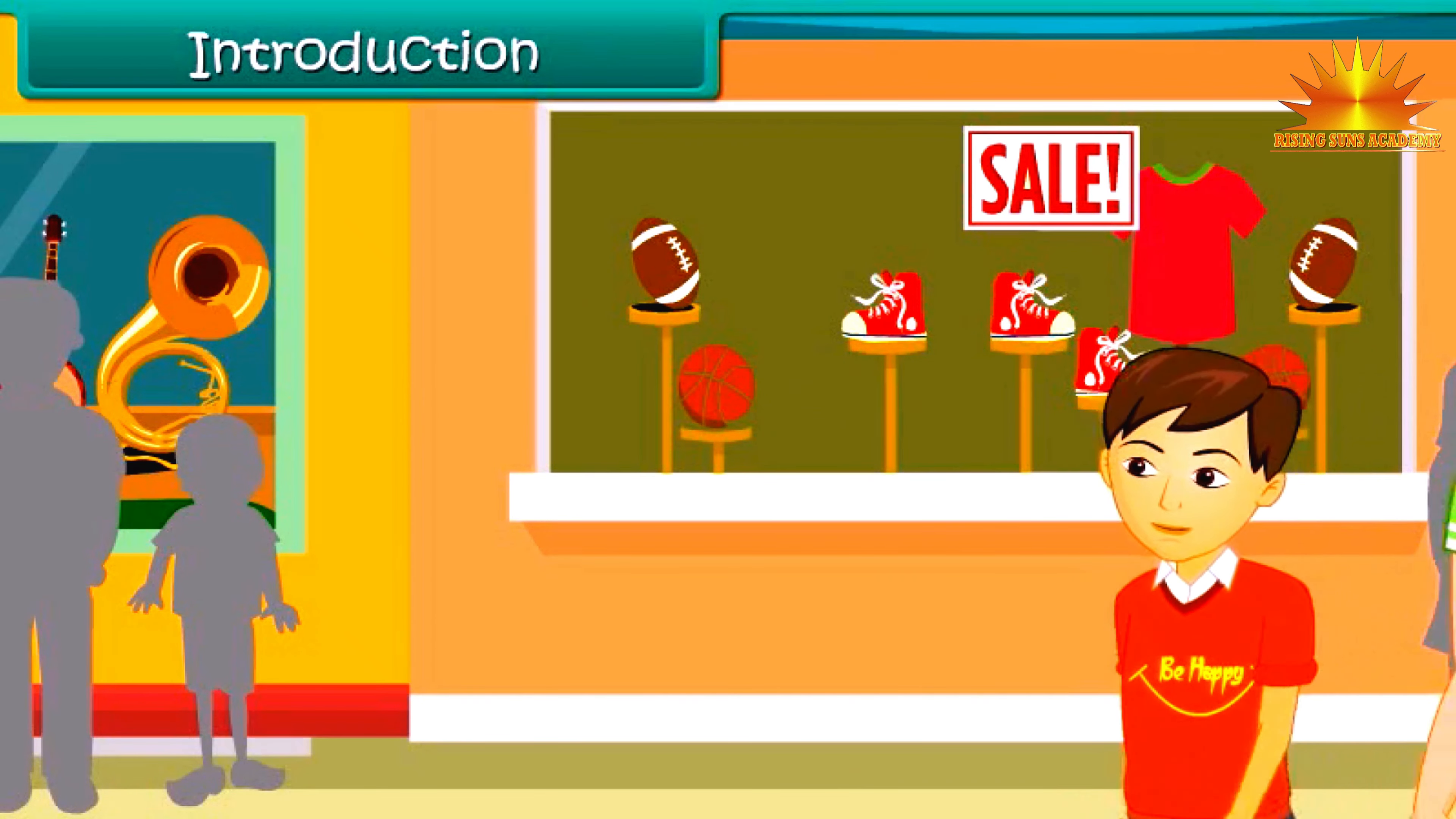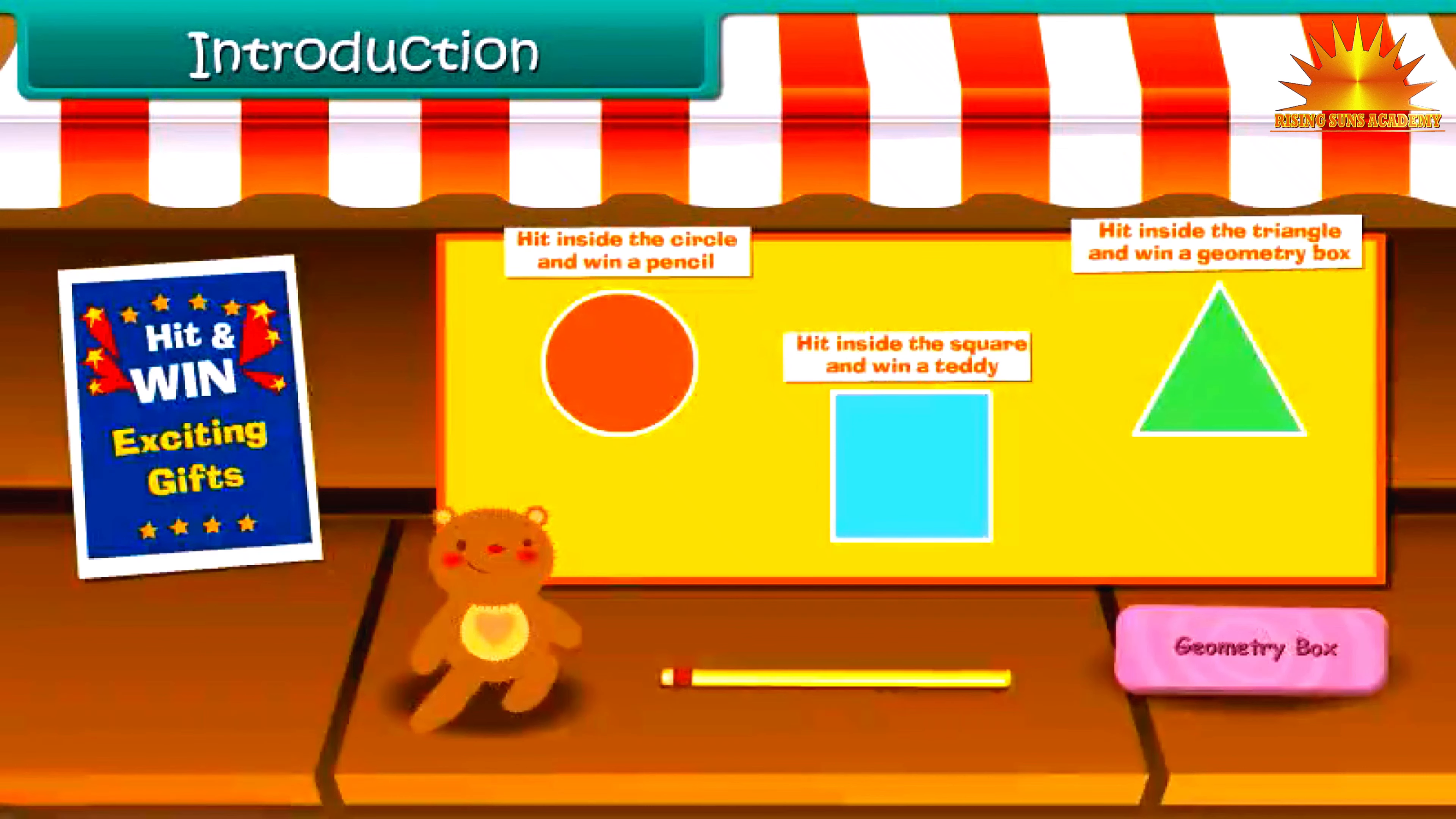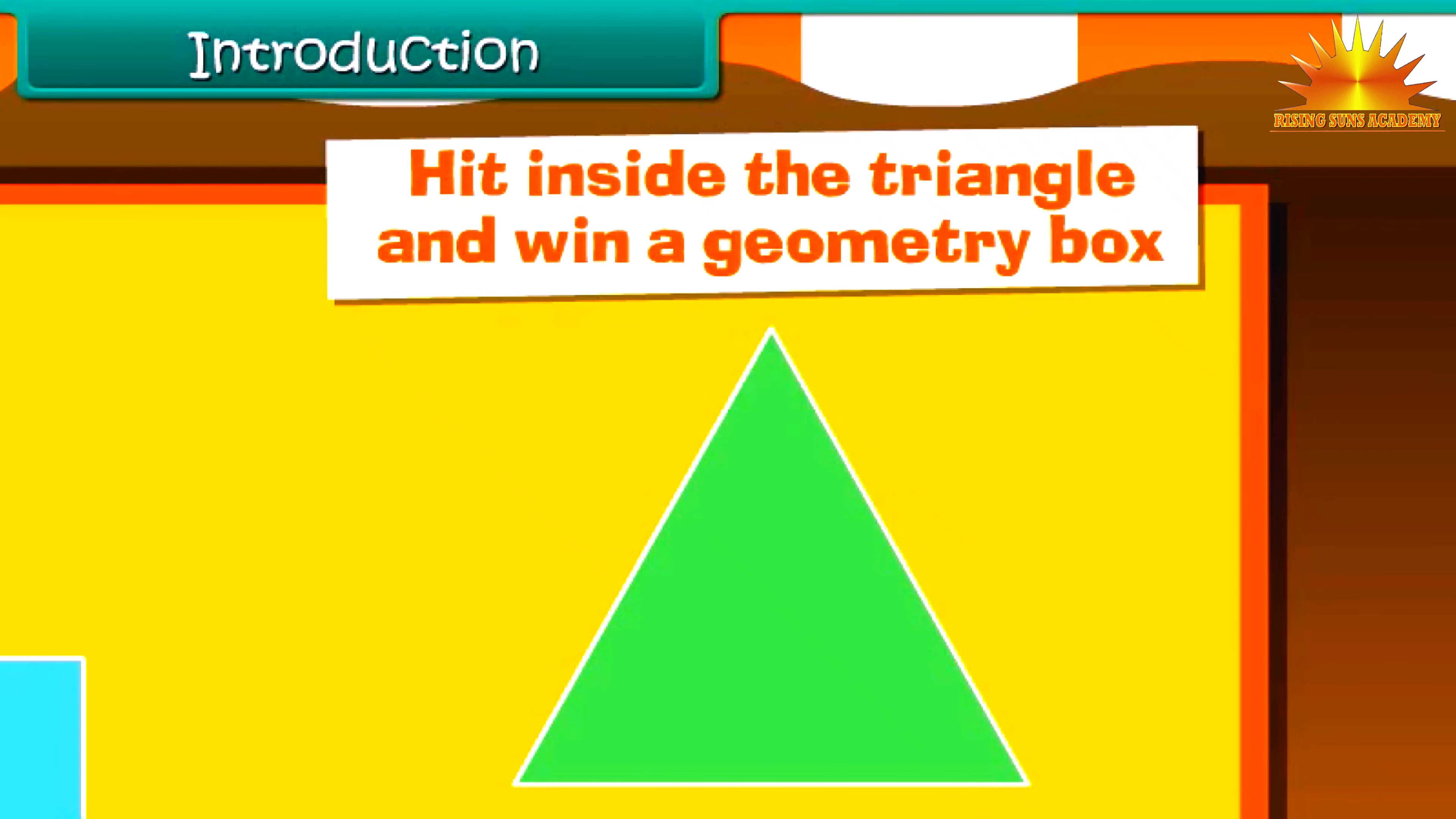Rahul visited a fair with his mother one day. There he notices a game. There were few shapes on a board. At the top of the board, few lines were written. Hit inside the circle and win a pencil. Hit inside the square and win a teddy. Hit inside the triangle and win yourself a geometry box.